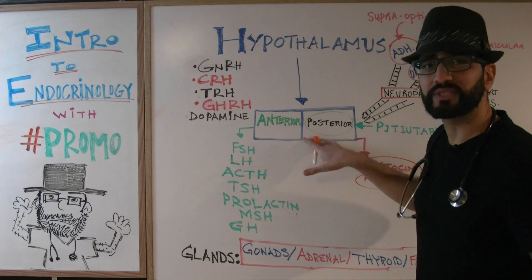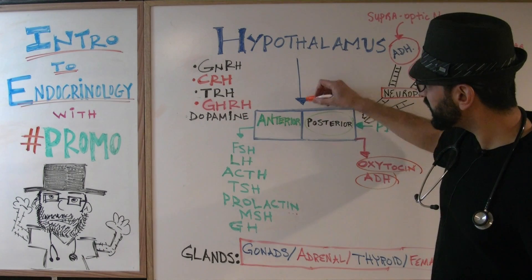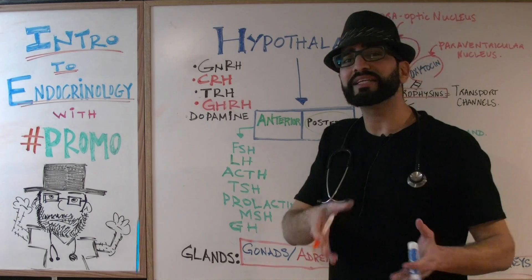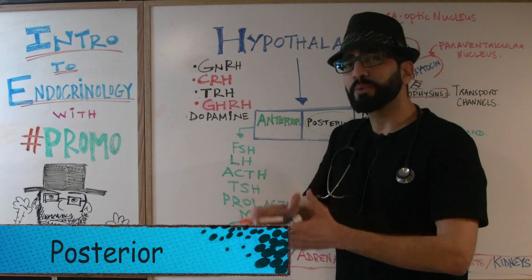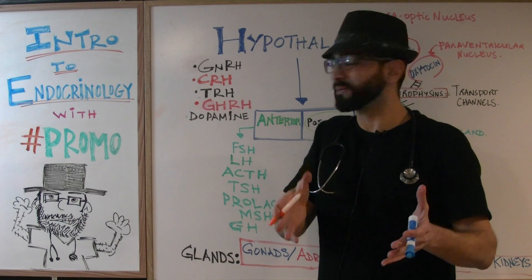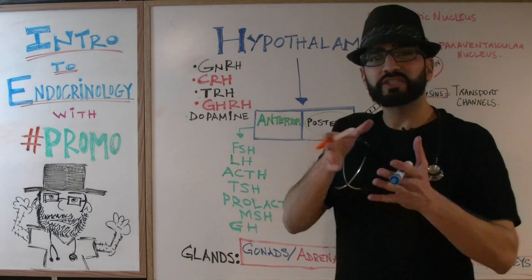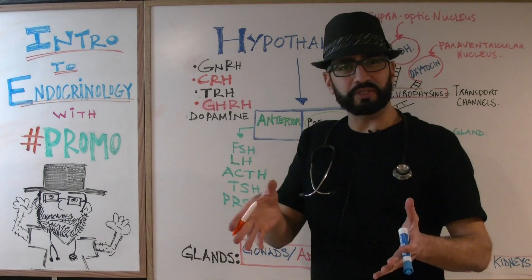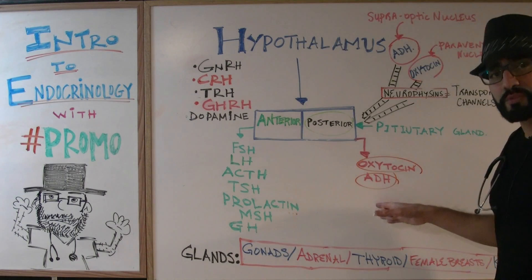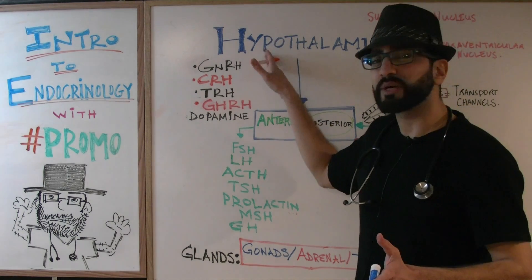Those hormones go towards the pituitary gland. As you can see from this line over here, we split the pituitary gland into an anterior side and a posterior side. That distinction is significant because on the anterior side certain hormones will be released, and on the posterior side different hormones will be released.